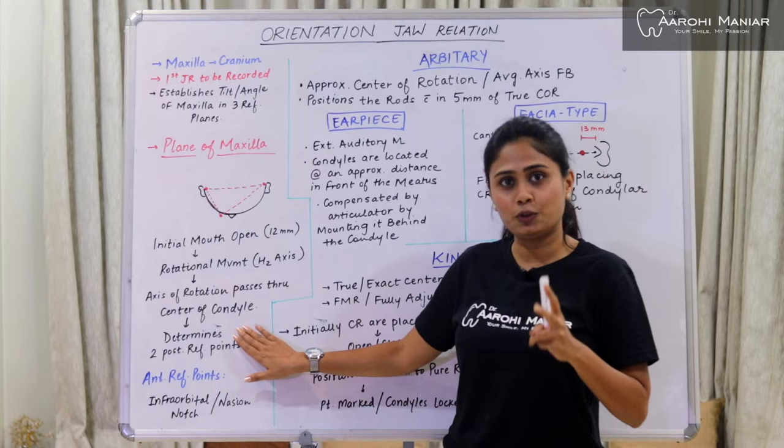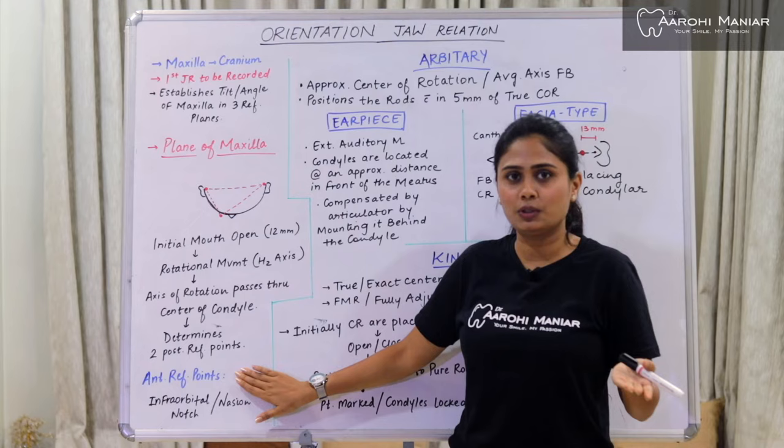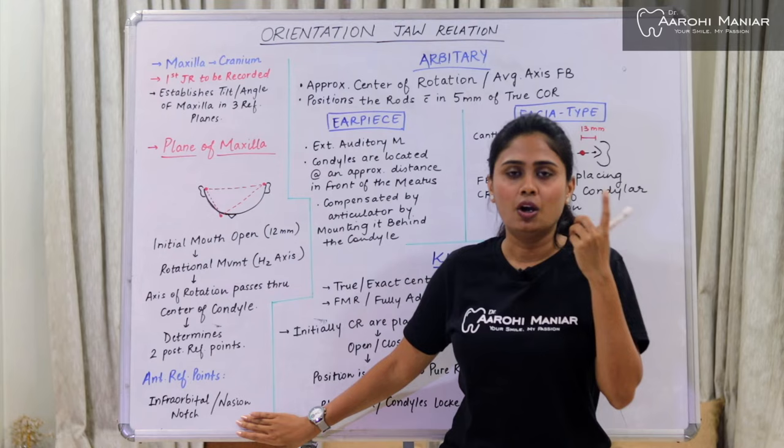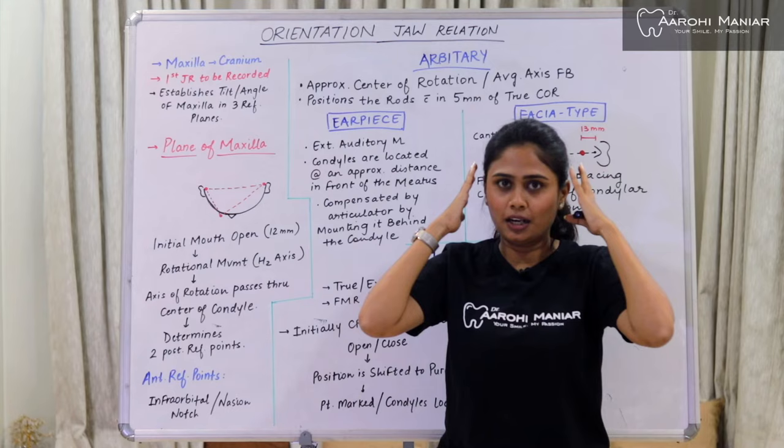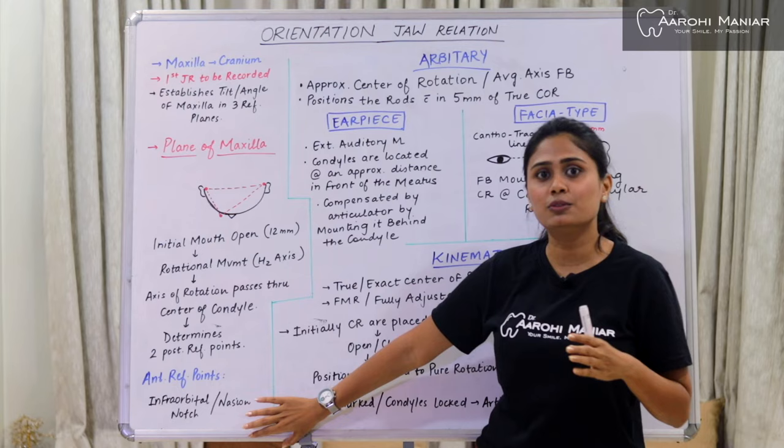These are the two posterior reference points. For our anterior reference point, we can mark our infraorbital ridge or our nasion. When we articulate our maxilla on these three reference points, we get the exact locked position in our cranium. To find our anterior reference point, we can use our face bow.